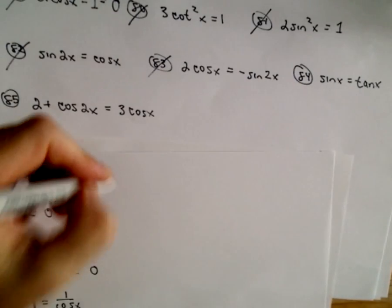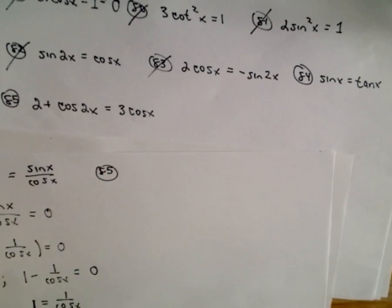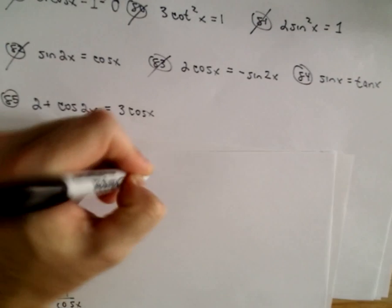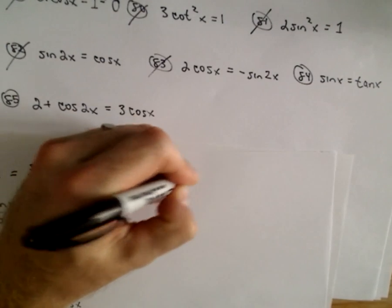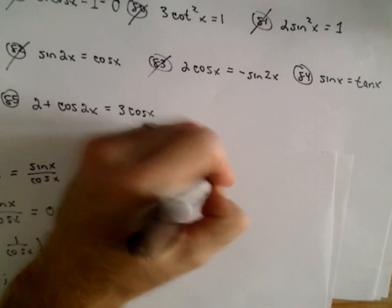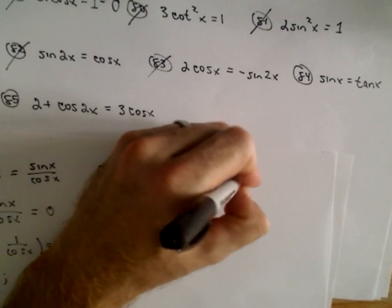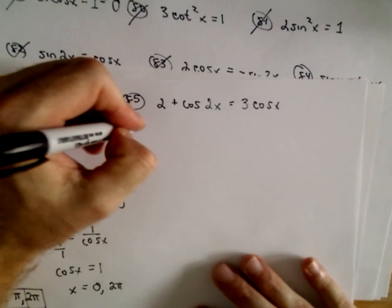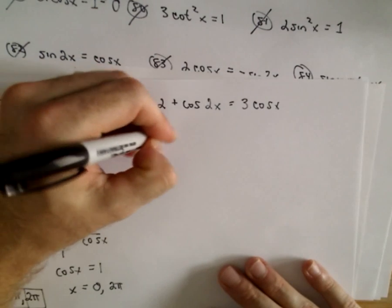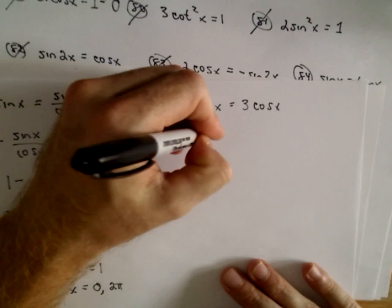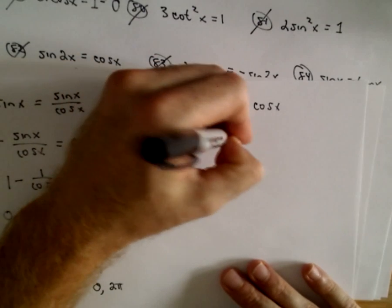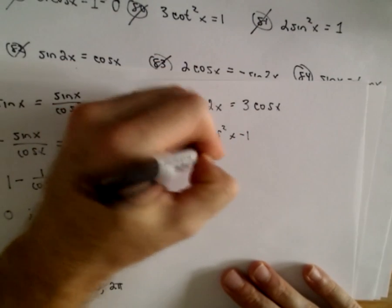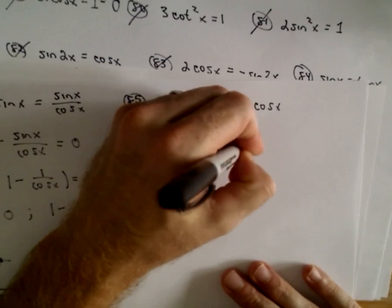Okay, 85 last but not least. We've got 2 plus cosine of 2x equals 3 times cosine x. Now I'm going to use a trig identity again here. There's two identities for cosine of 2x that you should know. There's 2 cosine squared x minus 1 and also 1 minus 2 times sine squared x.